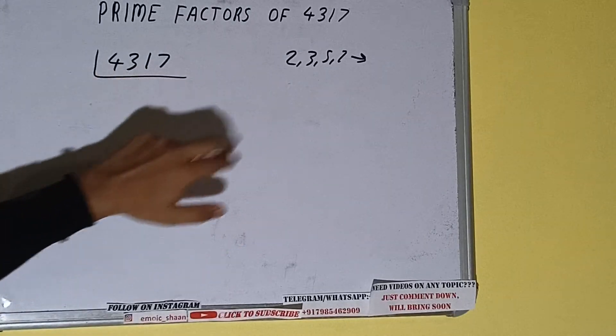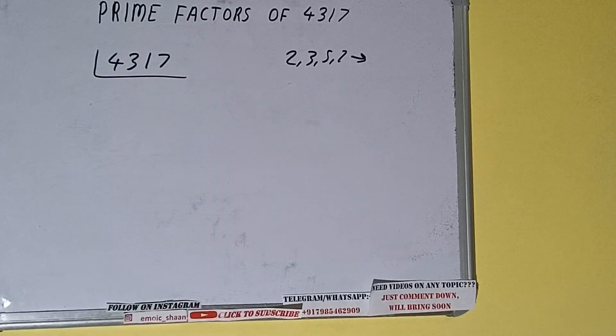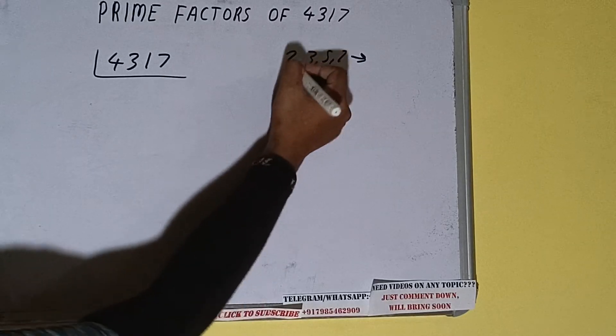That is 2. Is the number 4317 divisible by 2? Clearly not, because the number is odd. So we'll be checking with the next lowest prime number, that is 3.